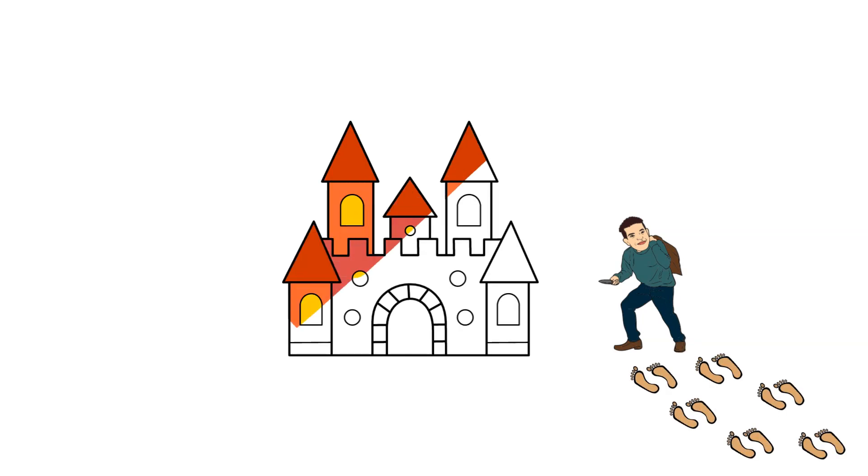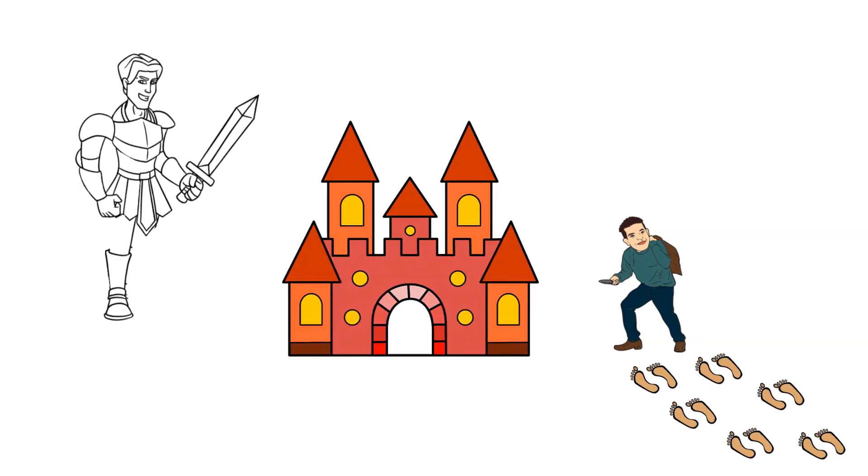For example, if someone tries to sneak in through a hidden door of your fortress, the threat hunters would spot those footprints and act quickly to stop the intruder.